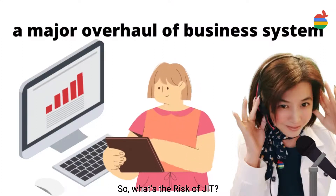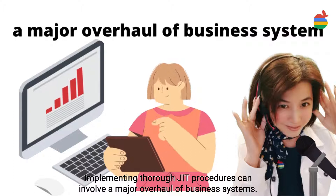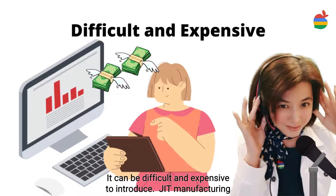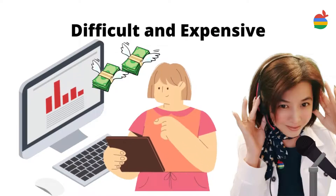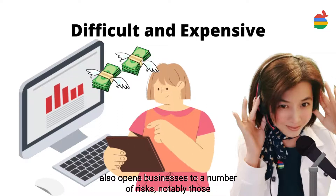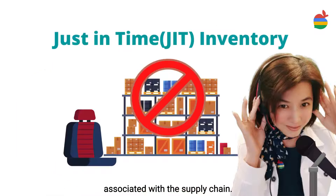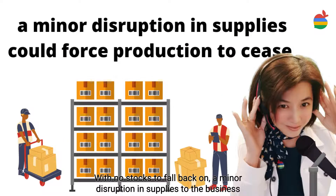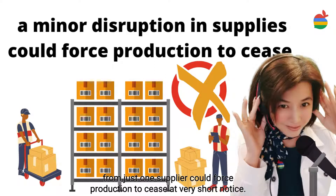What's the risk of JIT? Implementing thorough JIT procedures can involve a major overhaul of a business system. It can be difficult and expensive to introduce. JIT manufacturing also opens businesses to a number of risks, notably those associated with the supply chain. With no stock to fall back on, a minor disruption in supplies to the business from just one supplier could force production to cease at very short notice.